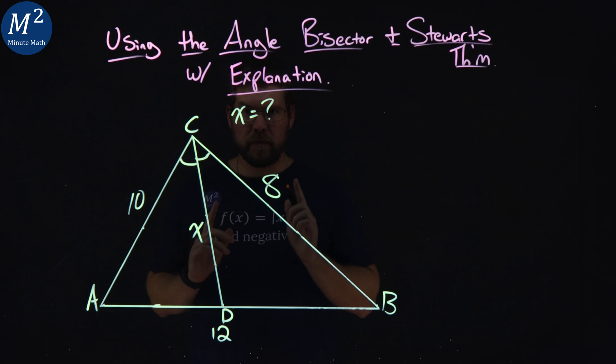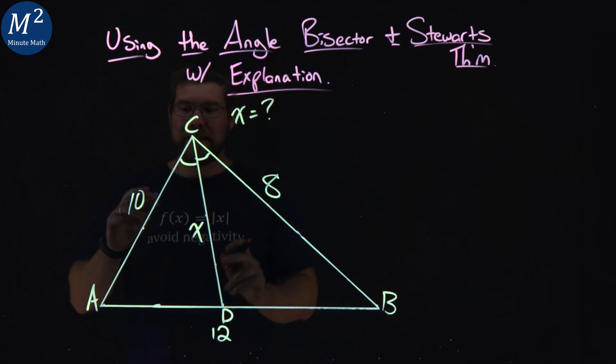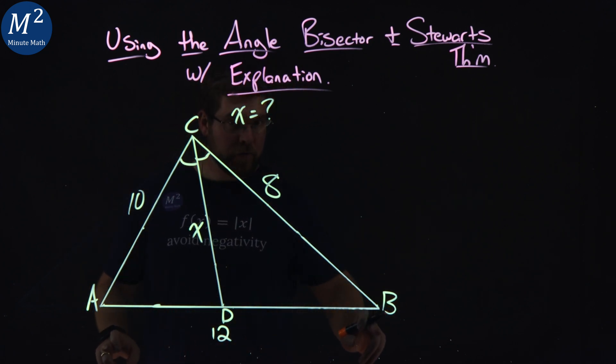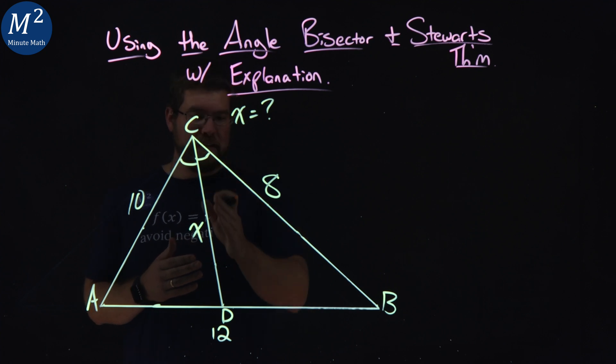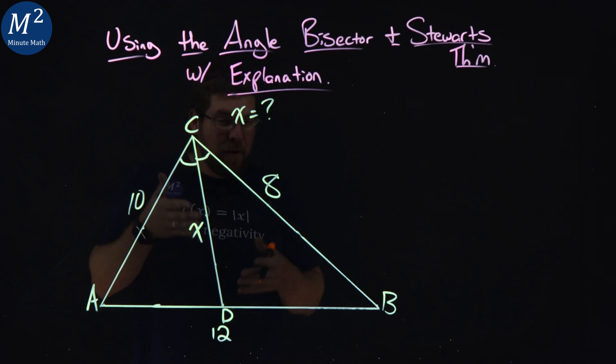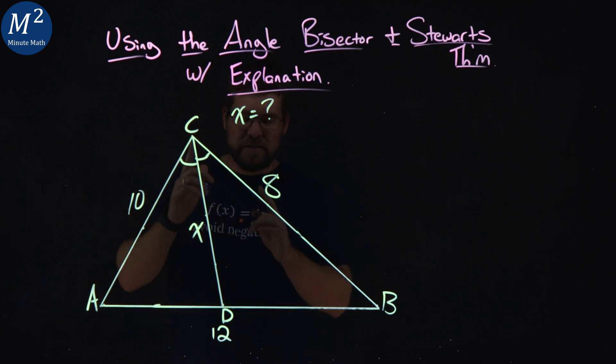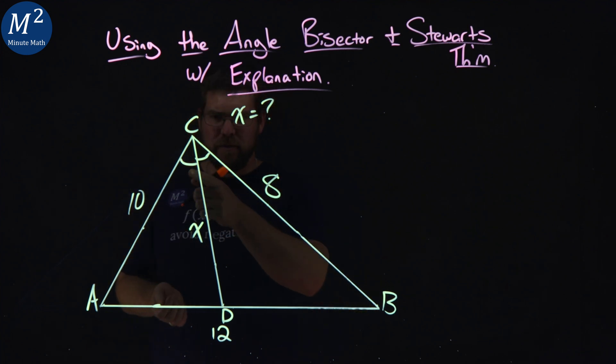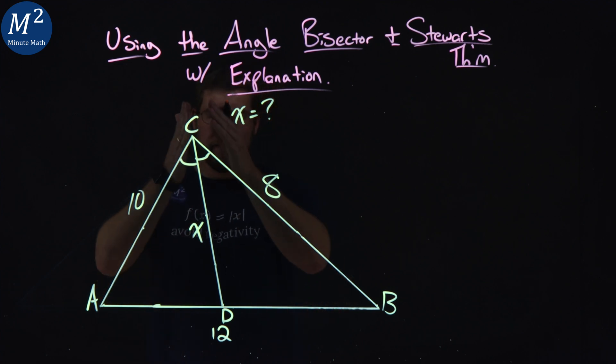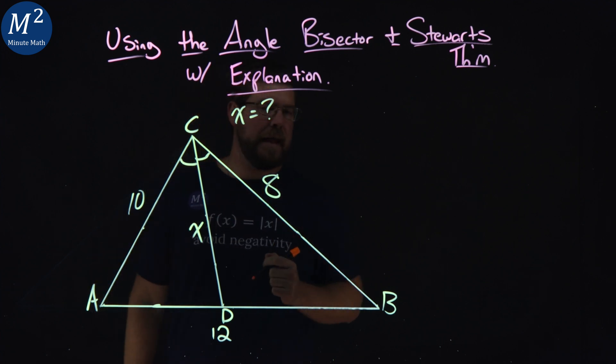We have this triangle. We have side lengths of 8, 10, and 12 for the triangle. We have a length CD which we have as x and we need to figure that out. Now CD is an angle bisector, meaning these two angles ACD and DCB are congruent. CD cuts the big angle directly in half.